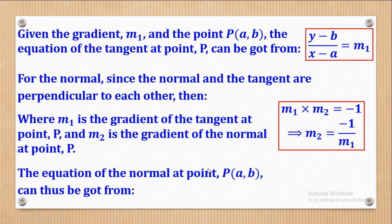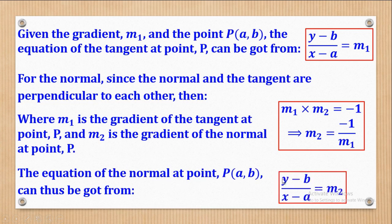Now that I've got the gradient of the normal, I can get the equation of the normal at that very point P from this equation: change in Y over change in X equal to M2.